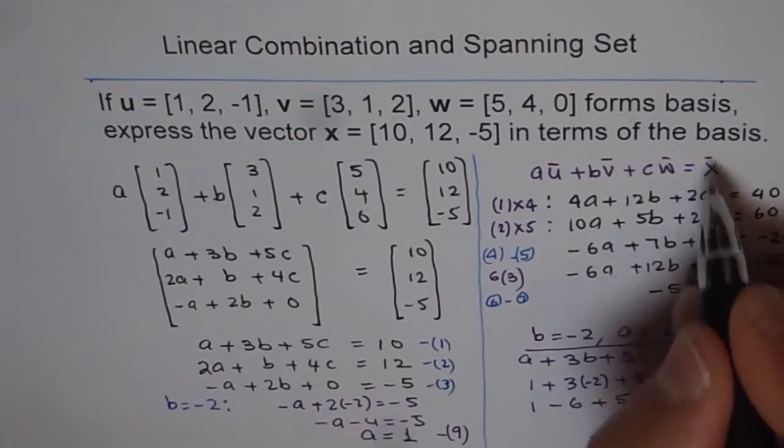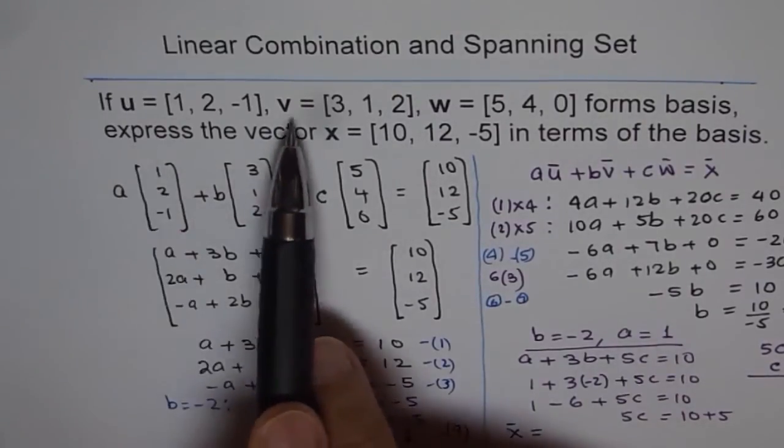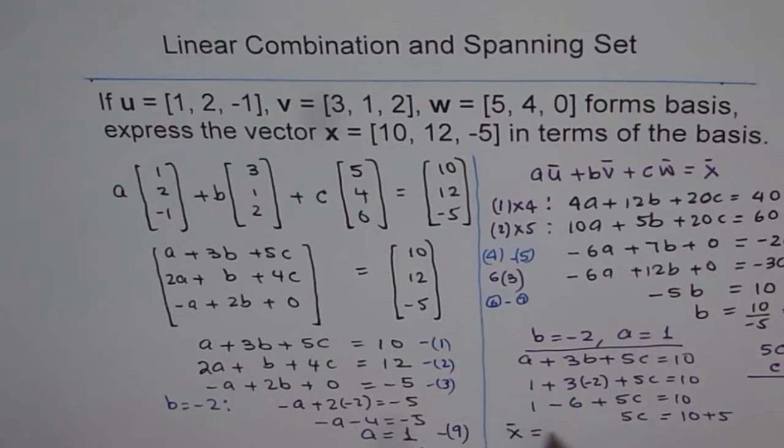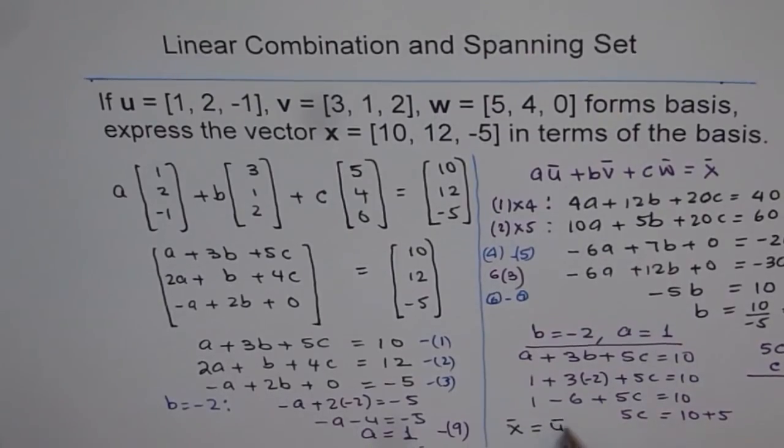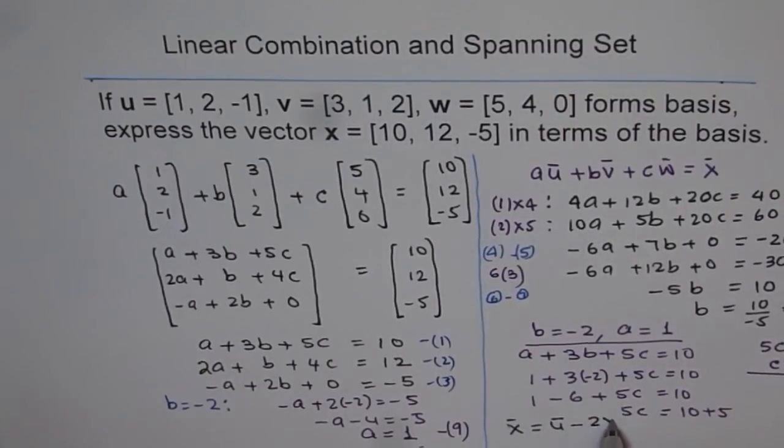and we say, well, now vector X can be written as combination of U, V, and W, where A is 1 for us, so we will write U. And B is minus 2 for us, so we will write minus 2V,